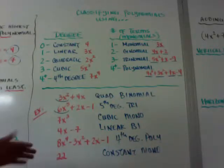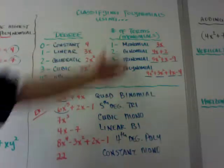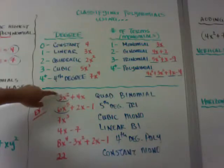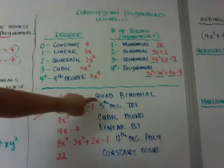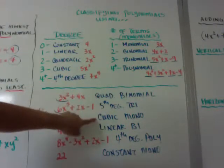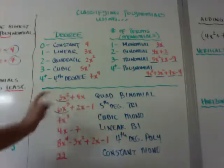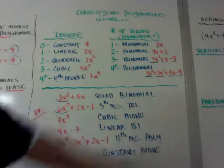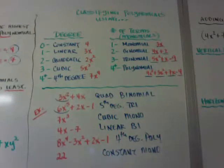That's how you classify them using degree and number of terms. Look for the highest degree first and put that first — quadratic, cubic, et cetera. Then you look at how many terms there are, how many monomials, and you put that second.